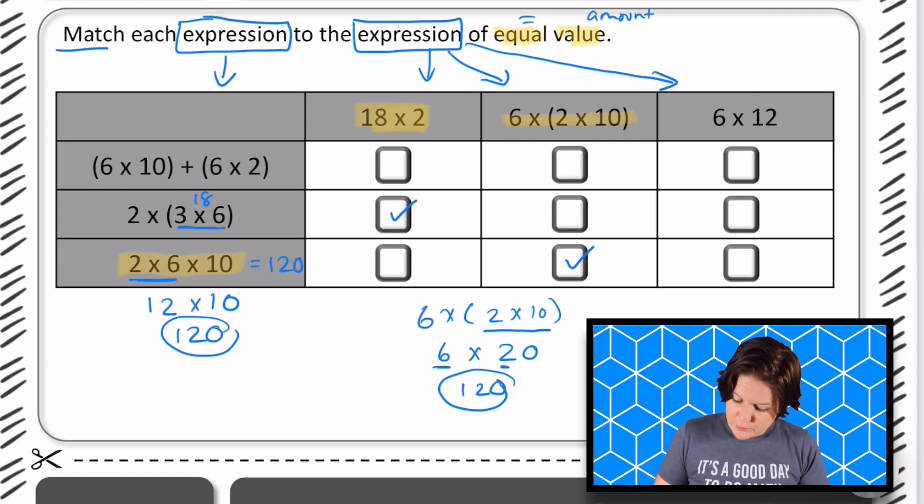So I'm actually going to solve this one up here. I'm seeing (6 x 10) + (6 x 2). So it kind of looks like this one has been decomposed or broken down using the distributive property of multiplication.